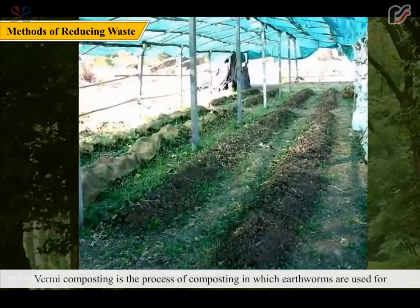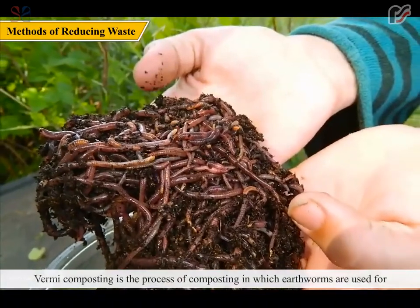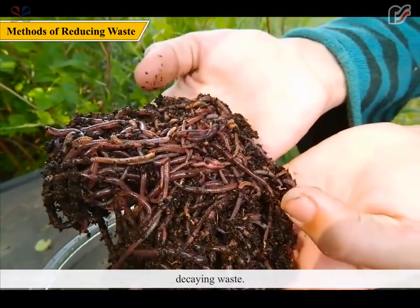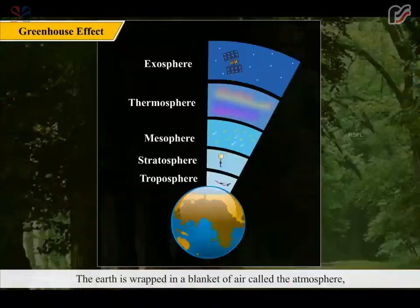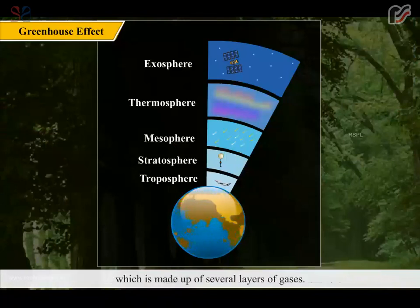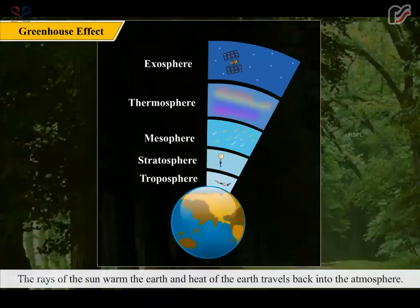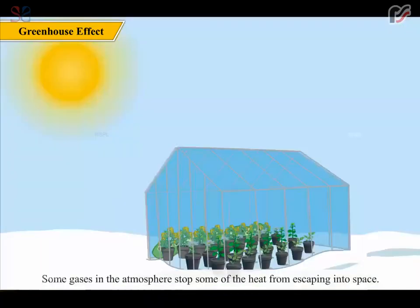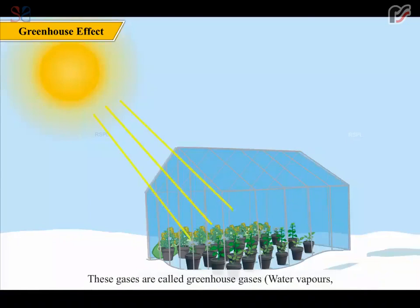Vermicomposting is the process of composting in which earthworms are used for decaying waste. The earth is wrapped in a blanket of air called the atmosphere, which is made up of several layers of gases. The rays of the sun warm the earth, and the heat of the earth travels back into the atmosphere.